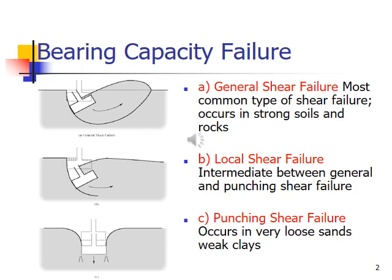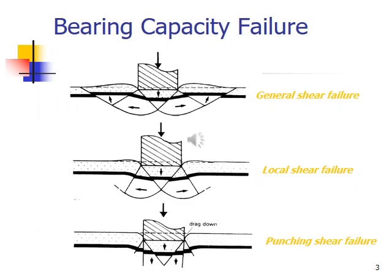Local shear failure, intermediate between general and punching shear failure. And punching shear failure, which occurs in very loose sands and weak clays. These bearing capacity failures are given below any foundation or below the soils: general shear failure, local shear failure, and punching shear failure are shown.